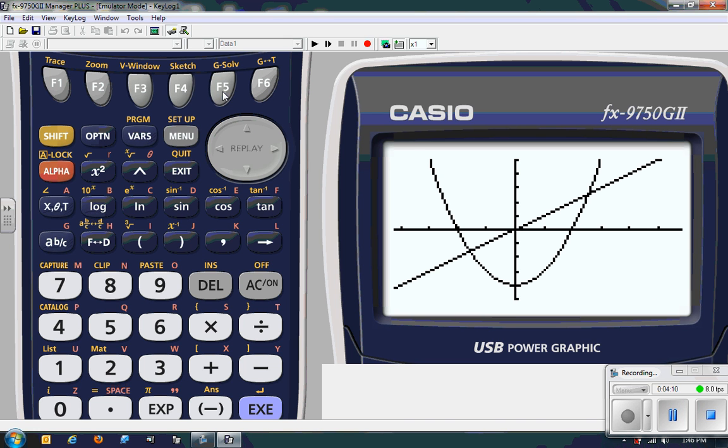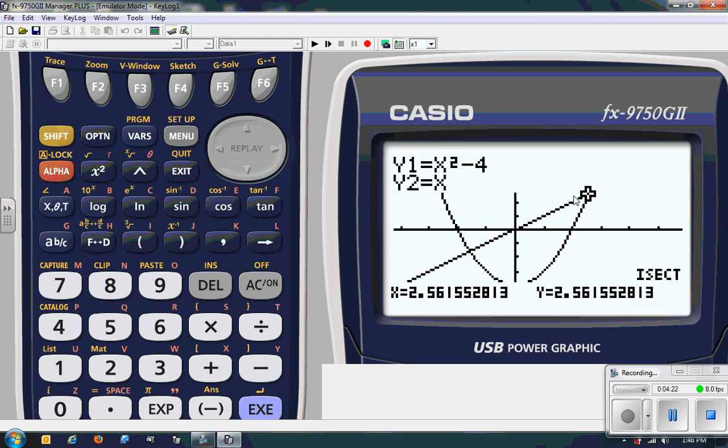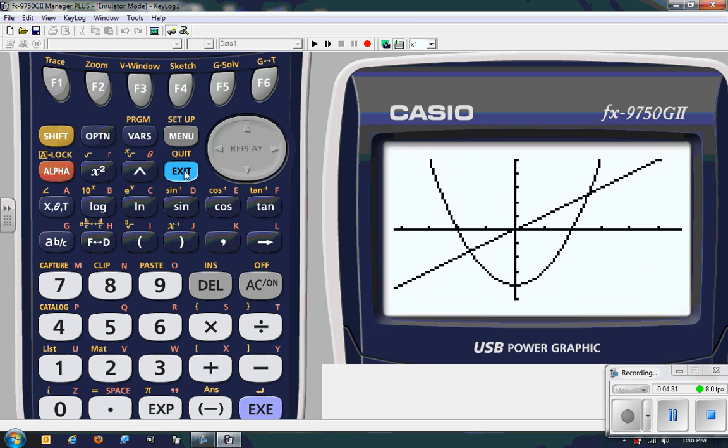Gsolve is my graph solver. F5. All of these are one-button pushers. Intersection of the two graphs. I just pressed it. And I have it. I've got the equations. I've got the location. What is it called? What are the values? If there's more than two, if there's three, four, or five, it'll find all of them.